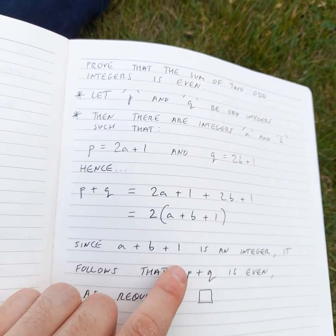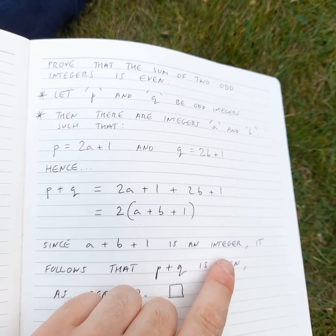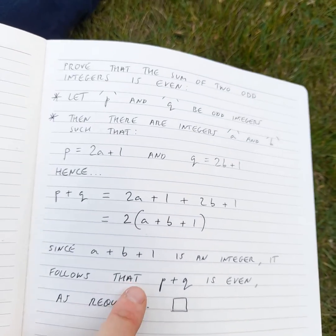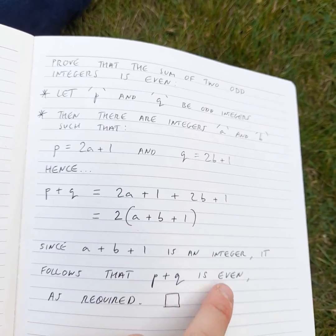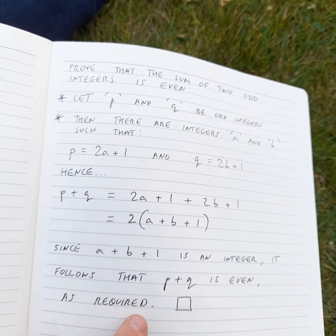Since a plus b plus 1 is an integer, it follows that p plus q is even, as required.